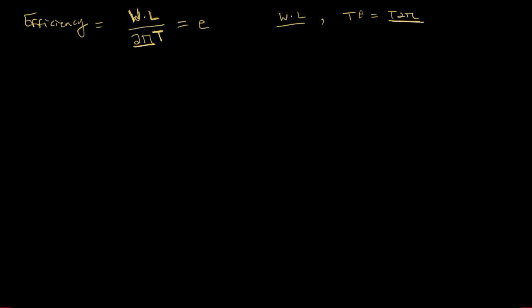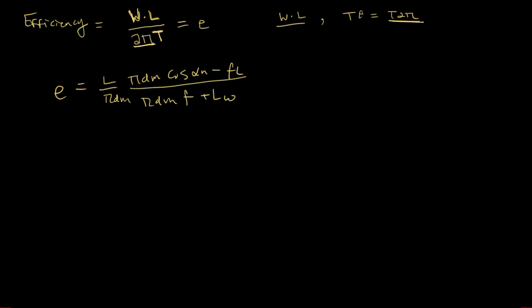Expressing efficiency in the variables we've defined: e = [l / (pi·dm)] · [pi·dm·cos(alpha_n) − f·l] / [pi·dm · (f + l·cos(alpha_n) / (pi·dm))], which simplifies to: e = [cos(alpha_n) − f·tan(lambda)] / [cos(alpha_n) + f·cot(lambda)].